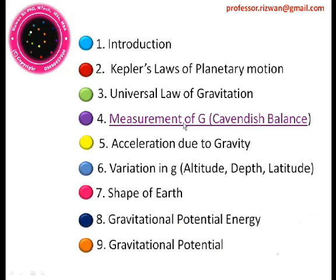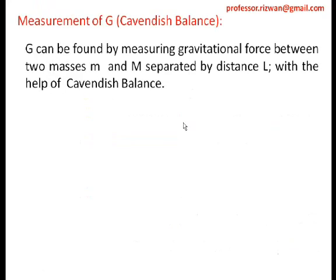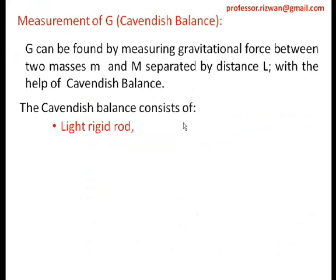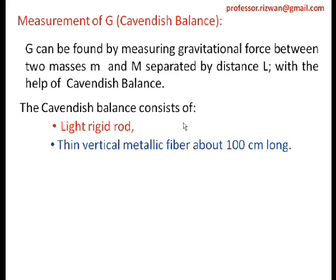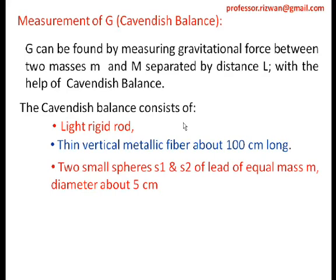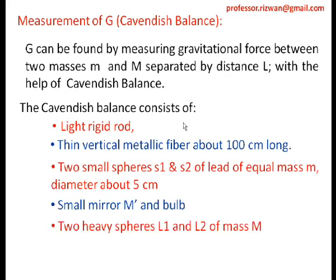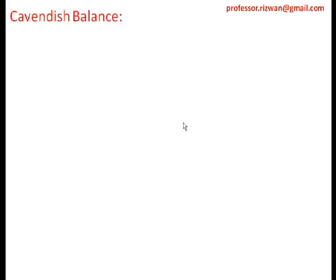Let us start with the measurement of G using the Cavendish balance. G can be found by measuring the gravitational force between two masses M and m separated by distance L. The Cavendish balance consists of a light rigid rod, a thin vertical metallic fiber wire about 100 centimeters long, two small lead spheres S1 and S2 of equal mass m and diameter about 5 centimeters, a small mirror M-dash with a bulb arrangement, and two heavy spheres L1 and L2 of mass capital M.